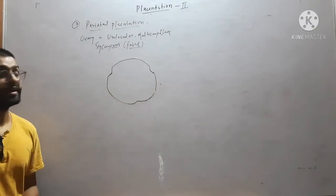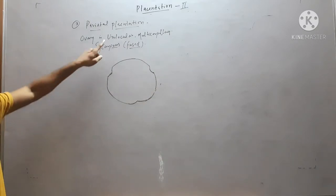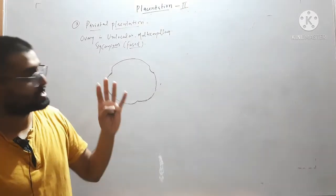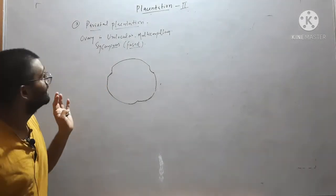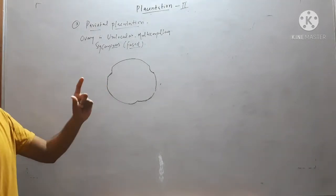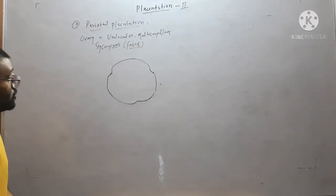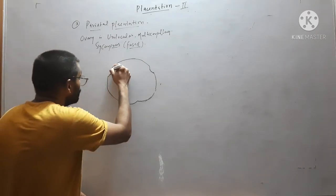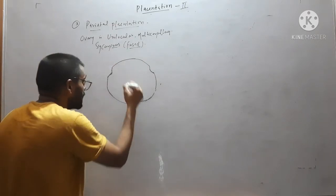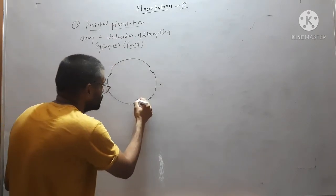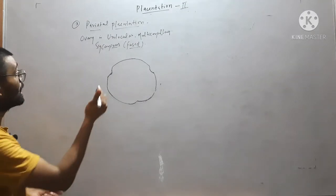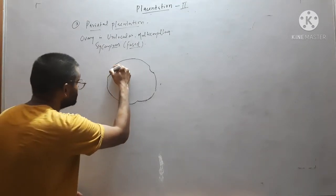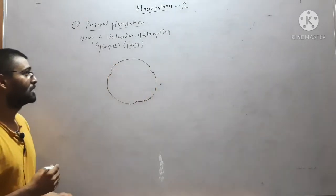Here, the ovary is unilocular — there are no locules, no septa formation. It is multicarpellary, with more than two carpels, and all carpels are fused. The placentae are borne on the margin of fusion of the carpels.